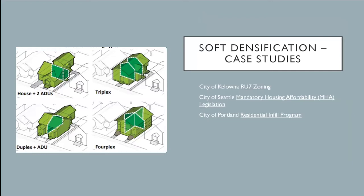Most of these were on the West Coast, where many infill housing strategies have taken off, generally due to the extremely high cost of living — which is unfortunately becoming a national issue as well. The first case study was in Kelowna, British Columbia, and their RU7 zone — an infill zone permitting versatile infill housing types of generally two to four units per lot depending on lot width.